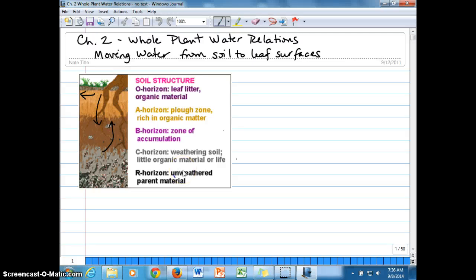All right, so we start chapter two, whole plant water relations. We would take information we talked about in chapter one, basic properties of water and how it moves from cell to cell down water potential gradients, and extrapolate that to moving water from soil to leaf surfaces.